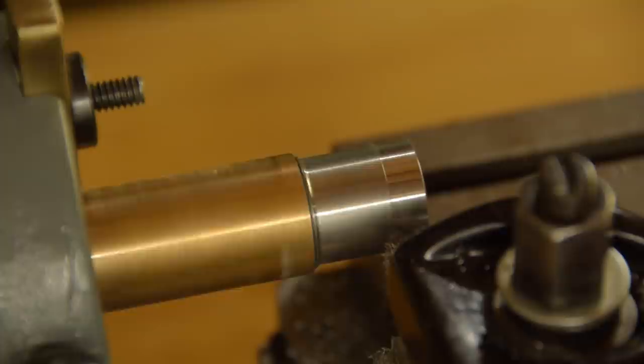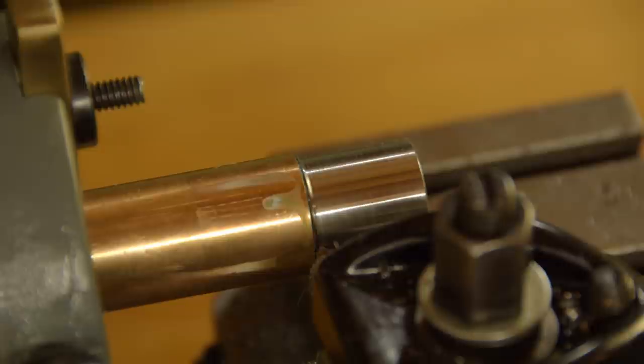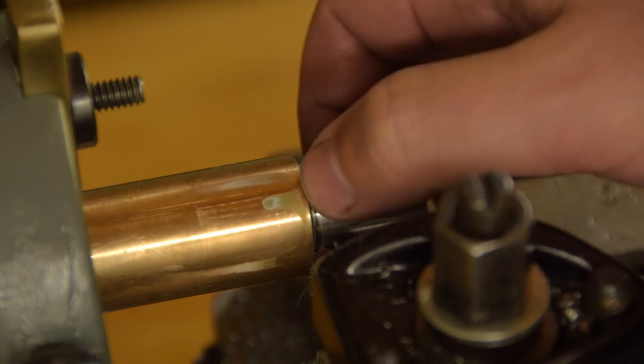The last pass I fed by hand going as slow as I could tolerate to get a good finish for the oil seal to run against. This is 12-14 steel which makes it easy to get a good surface finish straight from the cutter. This steel traditionally contained a little lead but I'm using the sulfurized version.